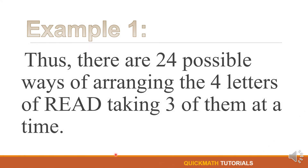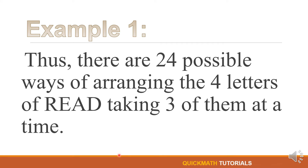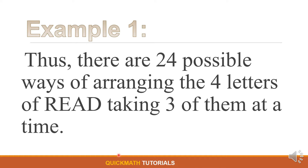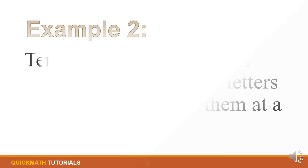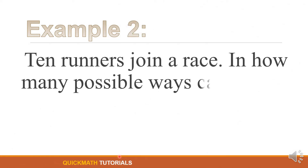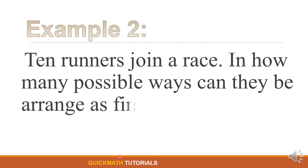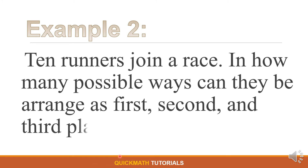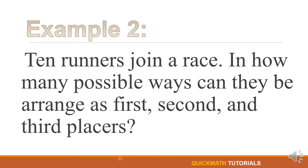So we have the permutation of four distinct letters taken three letters at a time is equal to 4 times 3 times 2, which is equal to 24. Thus, there are 24 possible ways of arranging the four letters of READ taking three of them at a time.